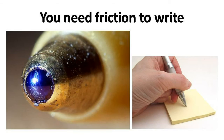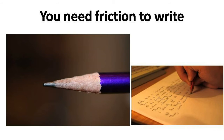You can't even write without friction. Ball pens have a ball at the tip of the pen — the ball grips the paper and rotates, takes ink from the reservoir, and rubs it on the paper. You can't write on glass because there is very little friction and the ball will slide. You can write on rough paper with a pencil because the rough surface rubs off some carbon particles.